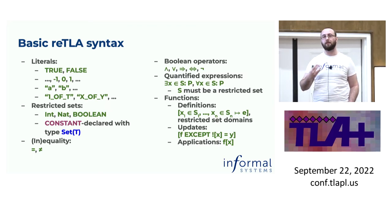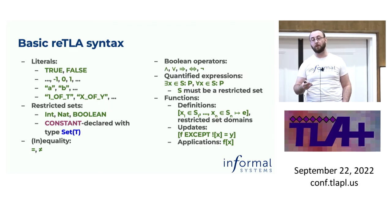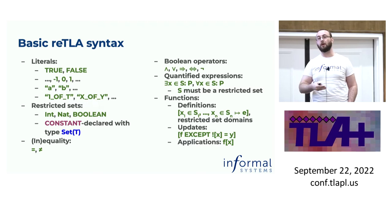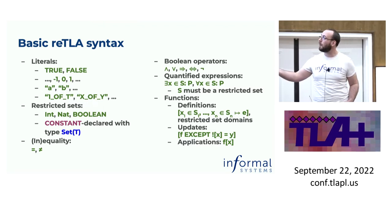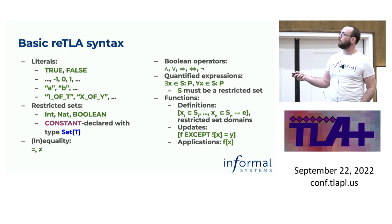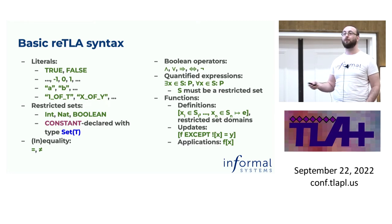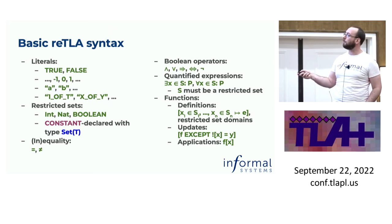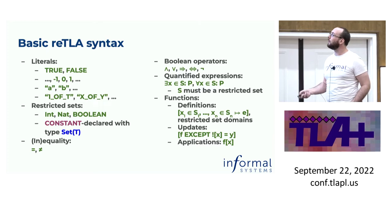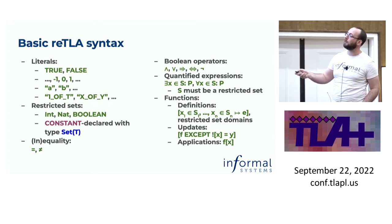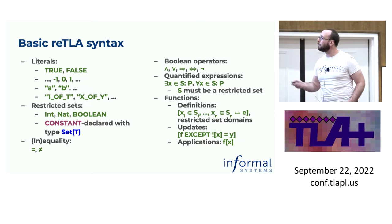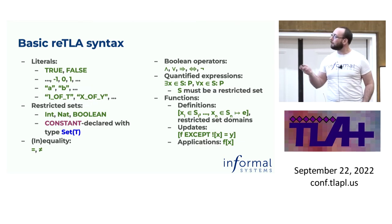At the SMT level, uninterpreted types have a very natural correspondence: you just instantiate an uninterpreted sort, and different values of that sort are different. This is an Apalache-specific thing, and we still allow it here because it's a useful abstraction tool. Usually when you're dealing with things like process labels, they just have to be different from each other — what they are doesn't matter. It can be strings or integers, they just have to be distinct. This has an asterisk associated to it, and I'll come back to it.